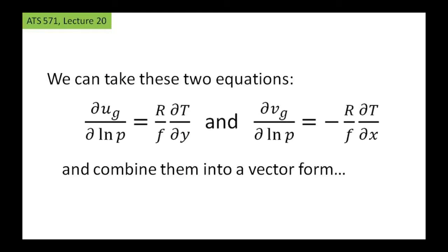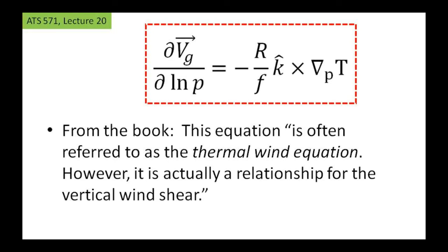We can take these two equations — one for the u-component and one for the v-component — and combine them into a vector form. The left-hand side is the change in the geostrophic wind vector with respect to height, equal to a right-hand side that has the gradient of temperature on an isobaric level (subscript p), crossed with k. The book says, 'This equation is often referred to as the thermal wind equation.'